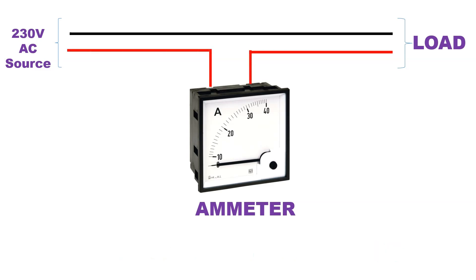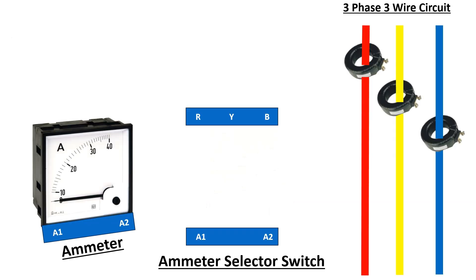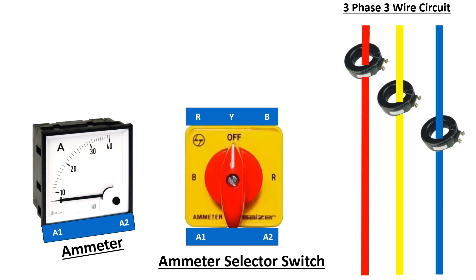The ammeter must be connected in series with a circuit. The ammeter selector switch is a device used in electrical systems, especially in three-phase circuits, to select which phase current is being measured. In a three-phase system, there are three main conductors: R, Y, and B.